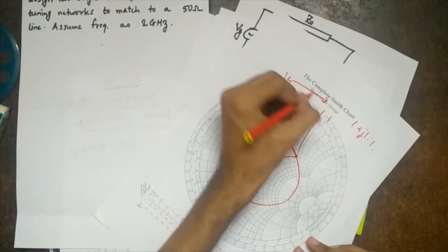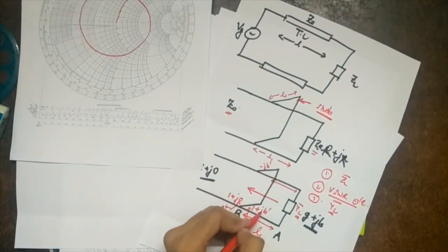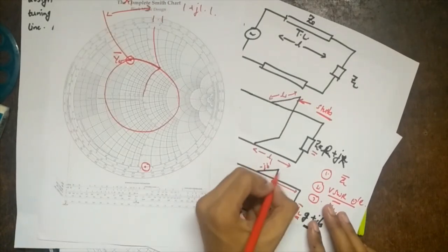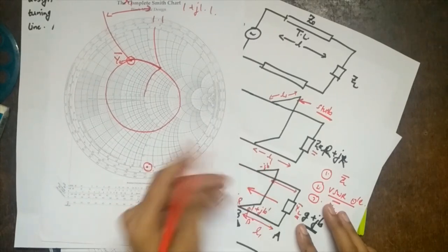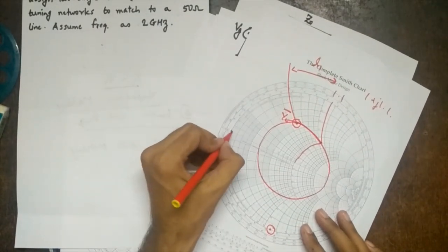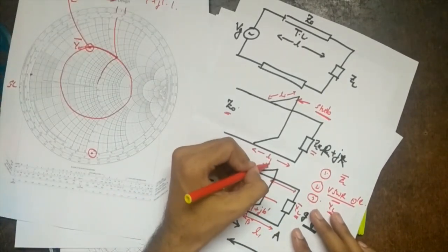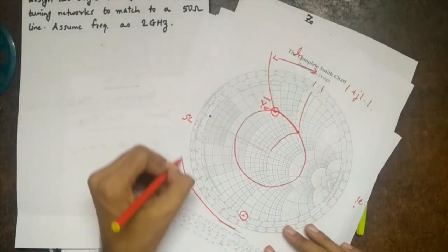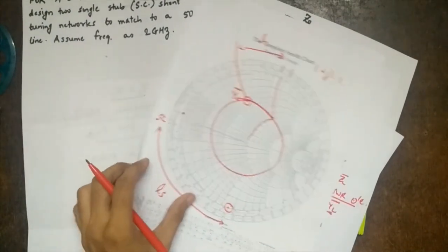Since b-prime is j1.1, the stub must have reactance minus j1.1. The stub can be either short circuit or open circuit. For a short circuit stub, take the short circuit point as the load and move clockwise (away from load, towards generator) to reach minus j1.1. That distance is ls, the stub length. This is how impedance matching is achieved with a single stub.